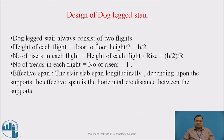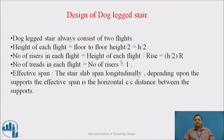The design of a dog-legged stair. A dog-legged stair always consists of two flights. Height of each flight is the floor-to-floor height divided by 2, that is h/2. Number of risers in each flight equals the height of each flight divided by rise. The number of treads in each flight is the number of risers minus 1. If we get a non-integer number of risers, we round it up to the next whole number.